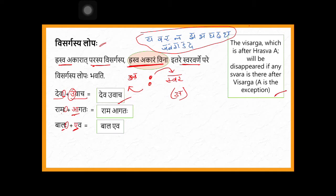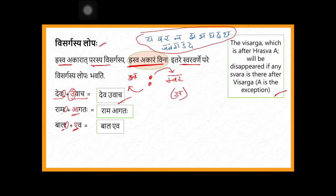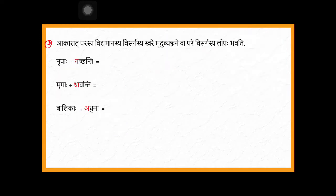Then 'balaha eva' — visarga, any swara, before visarga there is 'a', so 'bala eva'. These are the examples for visargasya lopaha — when this visarga will disappear. That is one point. This was the first type. Now the second type in visargasya lopaha — if hraswa akara, then if there is dirga akara...